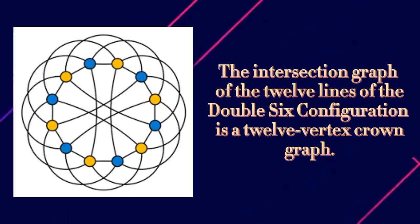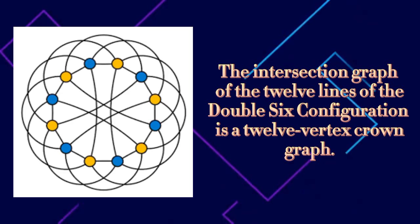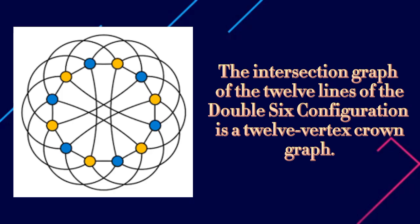The Levi graph of the double six may be obtained by replacing each edge of the crown graph by a two-edge path. The intersection graph of the entire set of 27 lines on a cubic surface is the complement of the Schläfli graph.